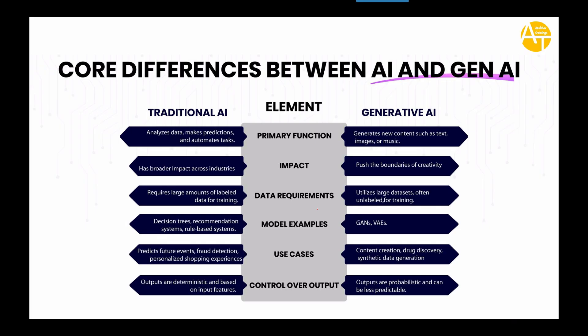Use cases of traditional AI include predicting future events like next quarter sales, fraud detection, and personalized shopping experiences. Whereas Generative AI focuses on creative tasks like content creation, drug discovery — where you give billions of data and parameters and it can provide chemical compositions to innovate new drugs — and synthetic data generation. Regarding control over output: traditional AI output is deterministic and based on input features, whereas Generative AI output is probabilistic and can be less predictable — sometimes even the creators of the biggest AI tools cannot predict what the output will be.